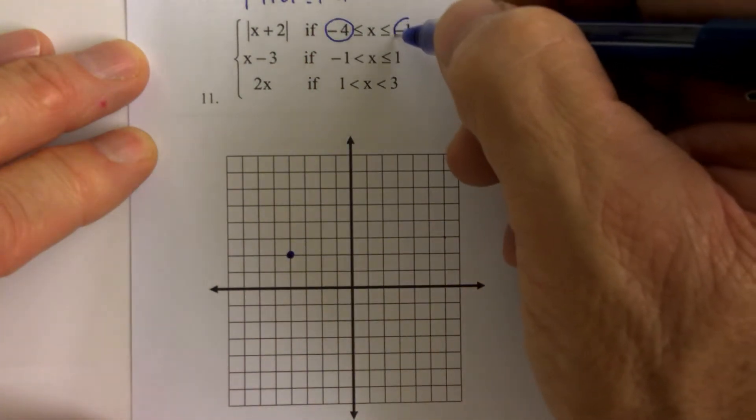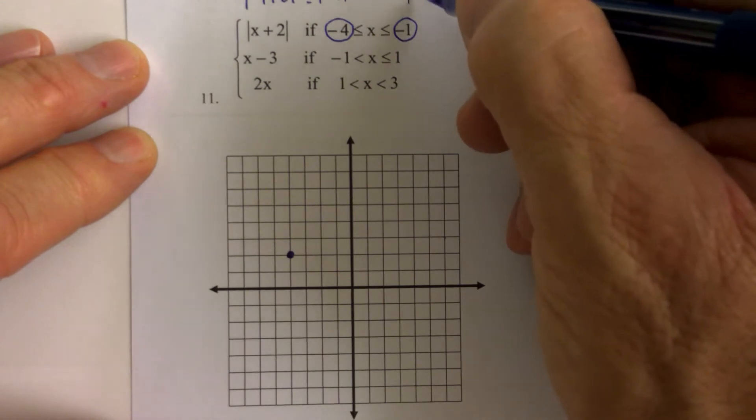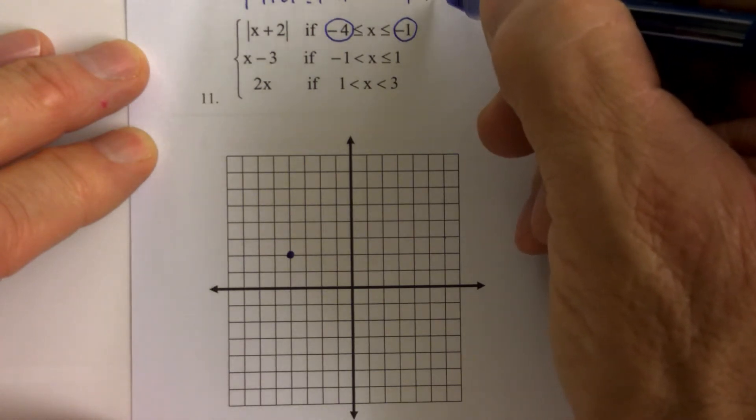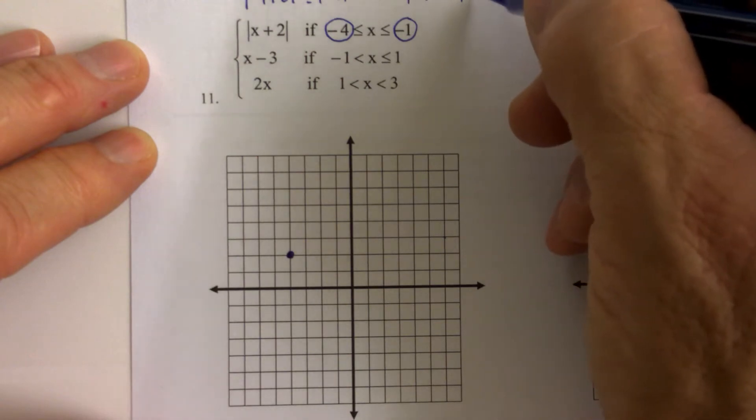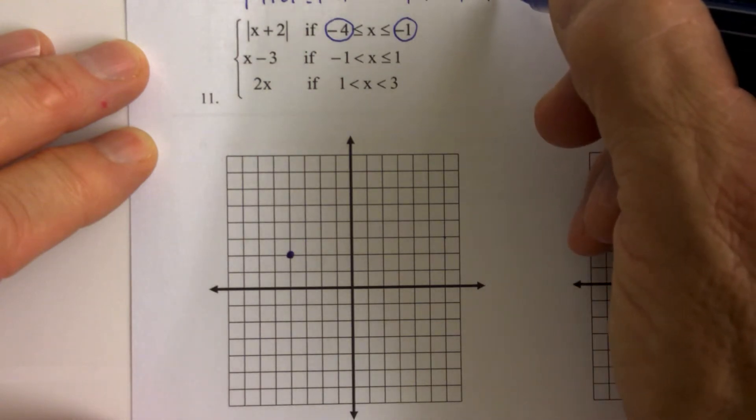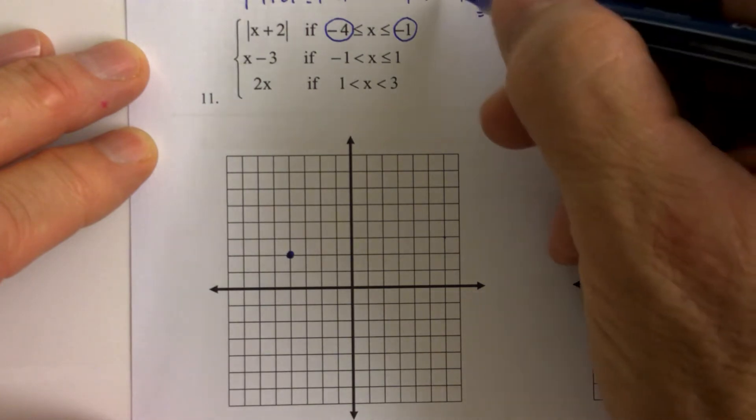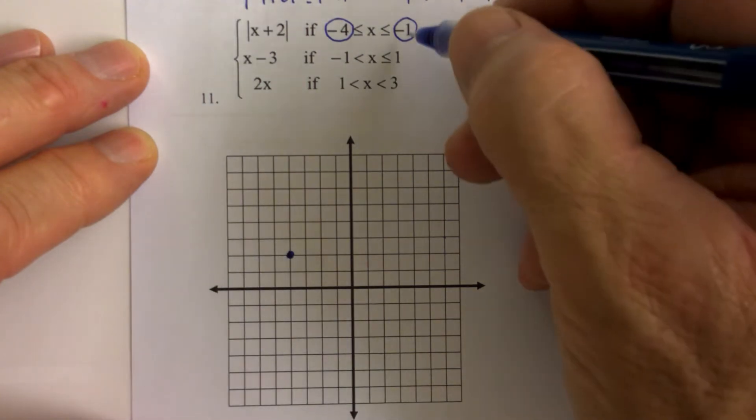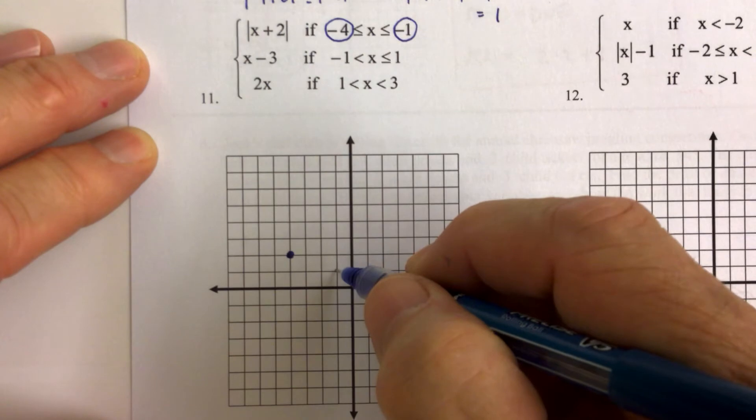Then we plug in the other endpoint. When you replace x with negative 1, you get absolute value of negative 1 plus 2, which is the absolute value of positive 1, which is 1. 2 minus 1 is 1. So when x is negative 1, y is 1.